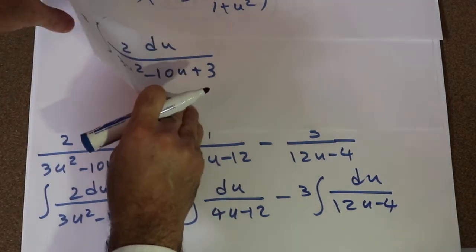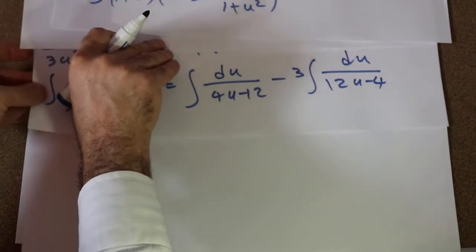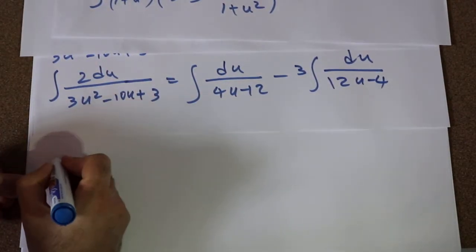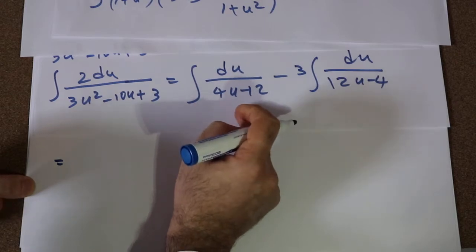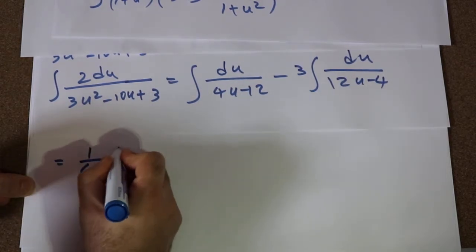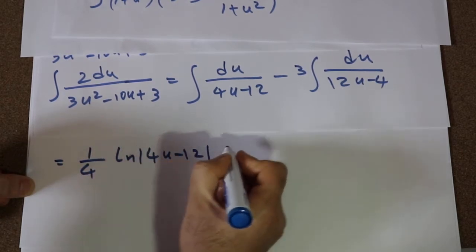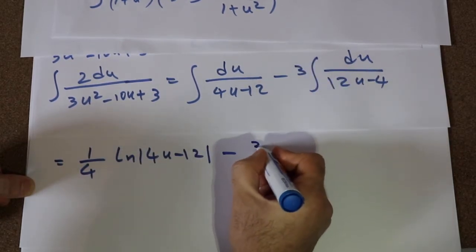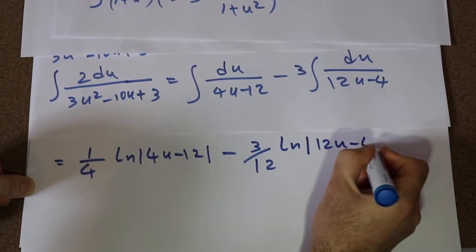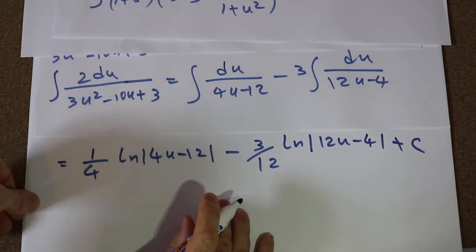The integral of du divided by 4u minus 12 is equal to 1 divided by 4 times ln|4u minus 12|, minus 3 divided by 12 times ln|12u minus 4|, plus c, which is the constant of integration.